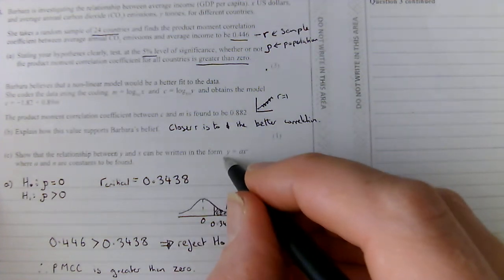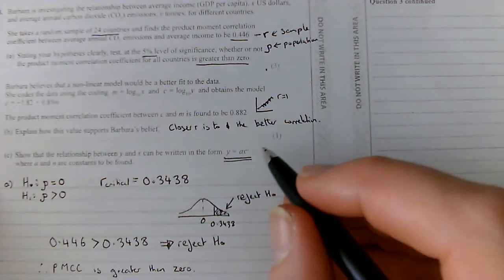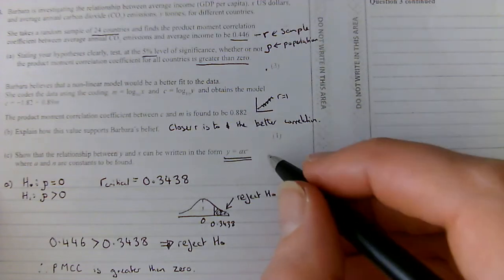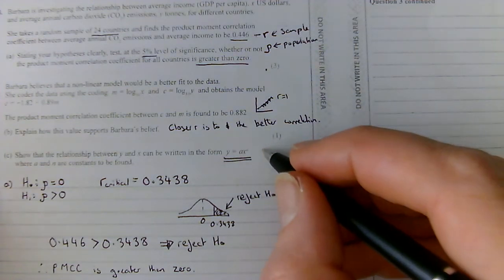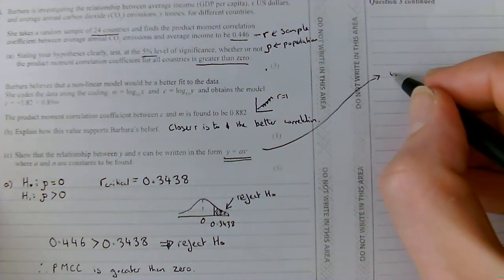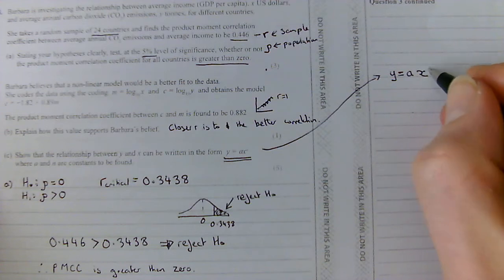So, we're going to start with this y equals Ax to the n. So, I'm going to do that over here. So, we're going to start with y equals Ax to the power of n. And what I'm going to do is, to linearise it, I'm always going to start by taking logarithms of both sides.